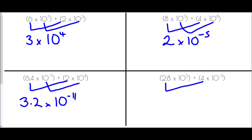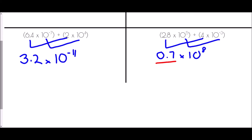For the final division example: 2.8 divided by 4 gives 0.7. Then 10 to the power of 5 divided by 10 to the power of negative 3 — that is 5 take away negative 3, which is the same as adding, giving 10 to the power of 8. But 0.7 is not between 1 and 10, so we make it 7. That uses one of our jumps to the right, so instead of 10 to the power of 8, the answer becomes 7 times 10 to the power of 7.